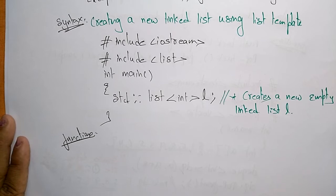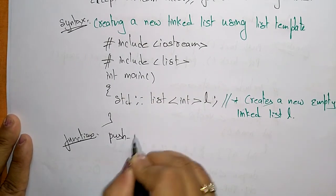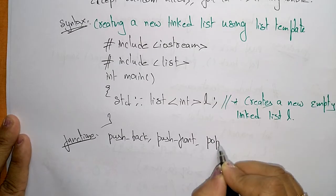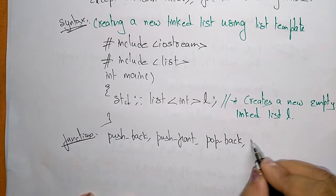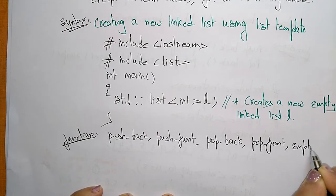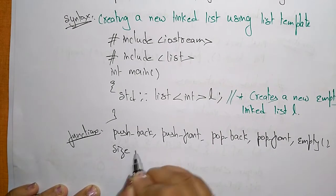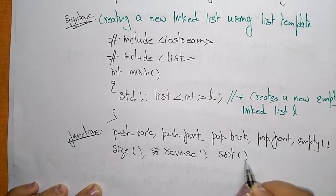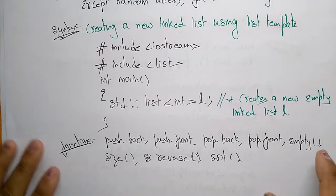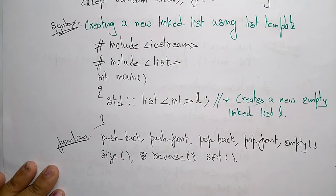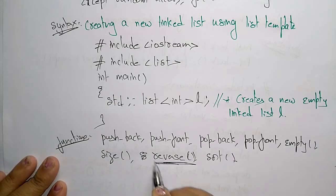The functions for the list are similar to vector and deque: push_back, push_front, pop_back, pop_front, empty, size, reverse, and sort. For the list example, since I used push for vector and pop for deque, I'll now demonstrate the reverse function.